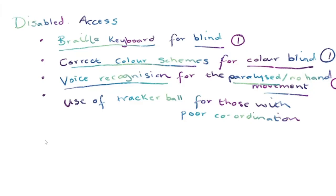And use of a tracker ball for those with poor coordination. Okay, so that is the disabled access. So braille keyboard for the blind, one mark. Correct colour schemes for the colour blind, voice recognition for the paralyzed or if you've got no hand movement. Use of a tracker ball for those with poor coordination. And there's lots and lots that you can choose from.